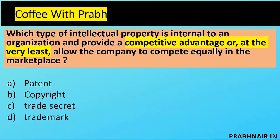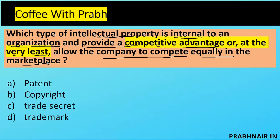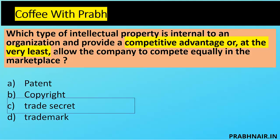Next coffee short: which type of intellectual property is internal to an organization and provides a competitive advantage, or at least allows the company to compete equally in the marketplace? Keywords: competitive advantage and internal to the organization. Patent protects ideas and goes public; copyright protects expression of ideas and goes public; trademark also goes public. The only option that stays internal is trade secret. The answer is C — trade secret.